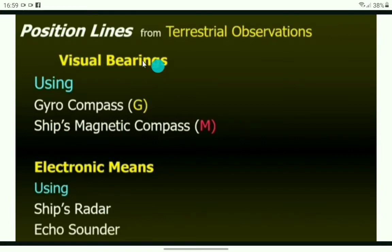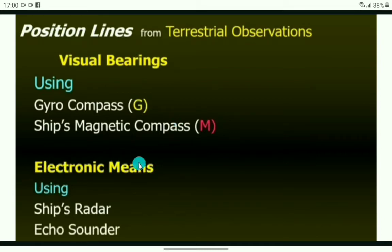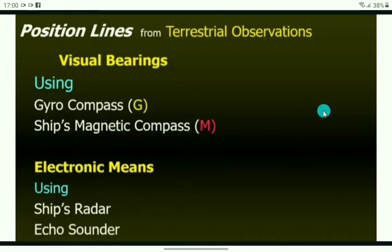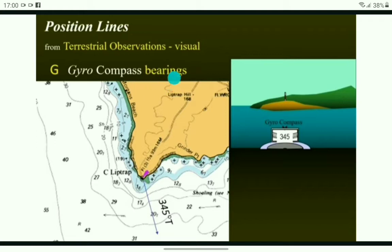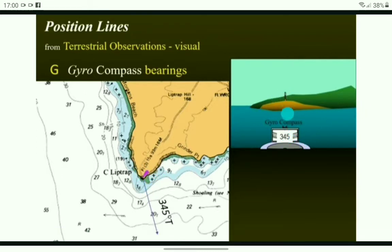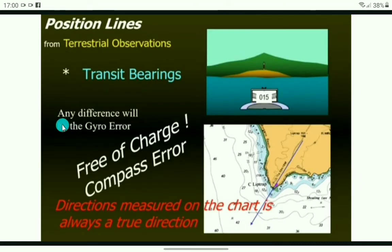We start with visual bearings. Visual bearings can be obtained using the gyro compass, which gives us the true bearing, or the ship's magnetic compass, which gives a compass bearing — though the magnetic compass is also affected by the ship's structures. For example, you can see that the bearing of a lighthouse is obtained using the gyro compass as 3-4-5 degrees, meaning we know we are somewhere along the line of bearing looking towards the lighthouse. Avoid making the mistake of putting the position line in the wrong direction.